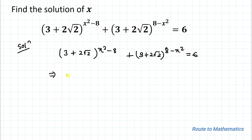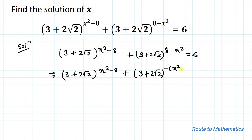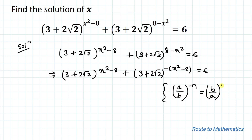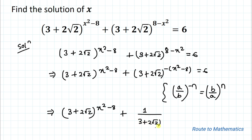In the next step we can rewrite this equation as (3 + 2√2)^(x² - 8) + (3 + 2√2)^(-(x² - 8)) = 6. Here we have a negative power. To convert this negative power into positive power, we apply the exponential rule: (a/b)^(-n) = (b/a)^n. By taking the reciprocal, we get (3 + 2√2)^(x² - 8) + 1/(3 + 2√2)^(x² - 8) = 6.